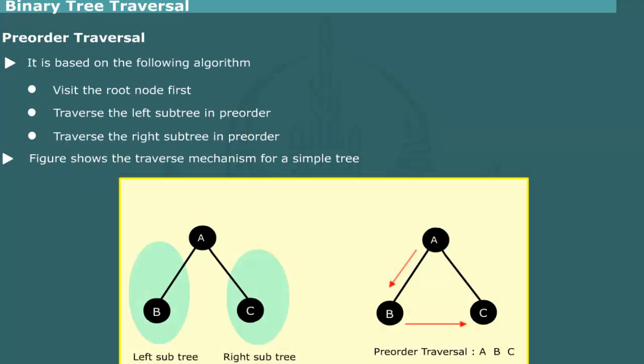The figure shows the traversal mechanism for a simple tree consisting of just three nodes. Root A is visited first. The left subtree B is visited next. The right subtree C is visited last. Thus, pre-order traversal is A, B, C.